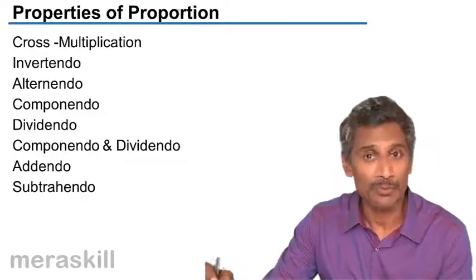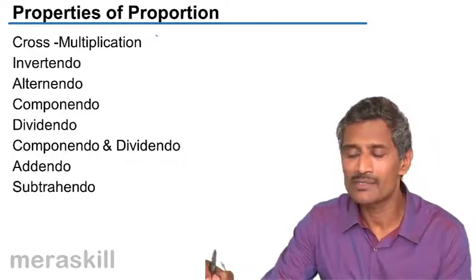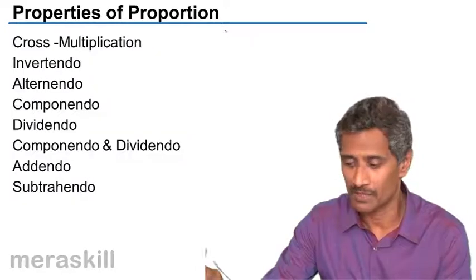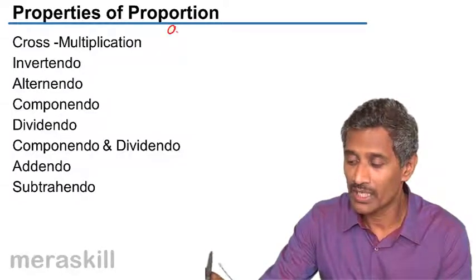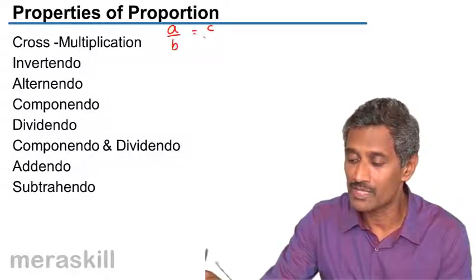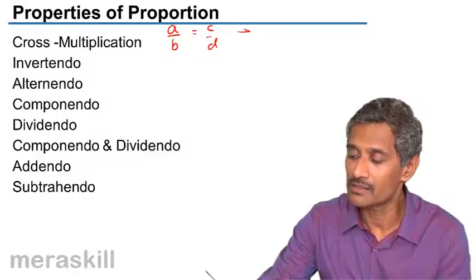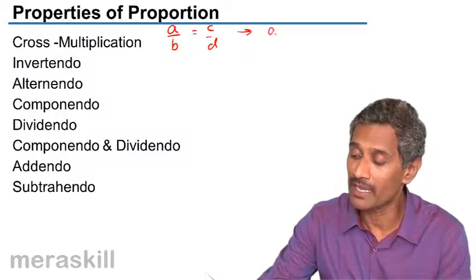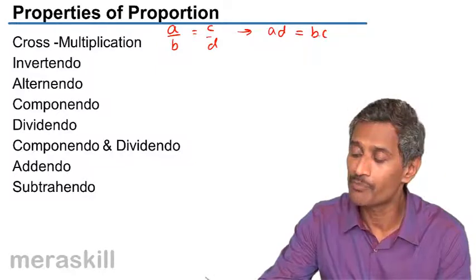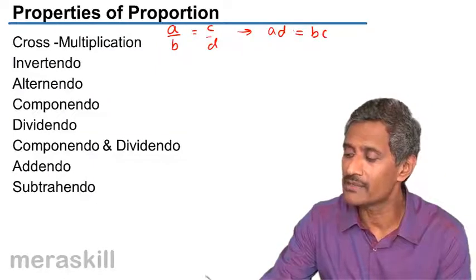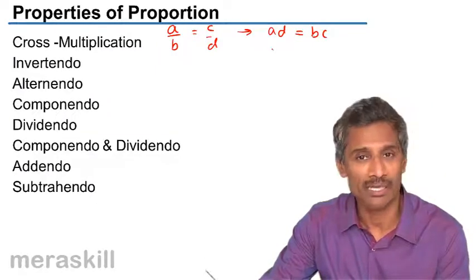Now, there are certain properties of proportion which we need to understand. One is a simple property of cross multiplication. That is, we know that A by B is equal to C by D. Hence, it is the same as telling cross multiply: A times D is equal to B times C. In simple words, if A times D is equal to B times C, then A by B will be equal to C by D.